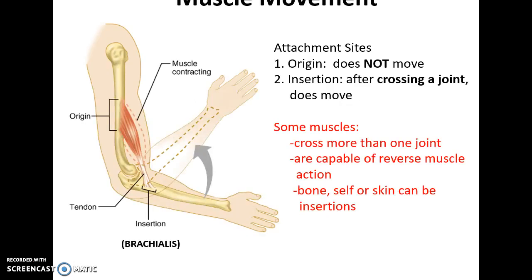Muscles attach to bones usually. The origin is where the muscle attaches but there should be little to no movement. The insertion is where the muscle attaches and there should be movement. Usually the muscle has to cross a joint, and the movement occurs at the joint. Some muscles can cross more than one joint. Some are capable of a reverse muscle action — they can flip the insertion and origins. Muscles tend to insert into bone, but sometimes they can insert into themselves or into skin.